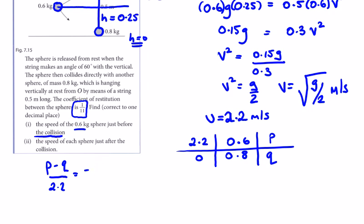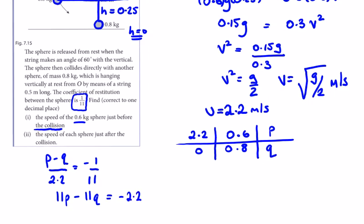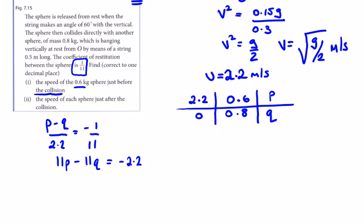So 11p - 11q equals -2.2. Now 2.2 times 5 is 11, so dividing by 2.2 to help simplify.